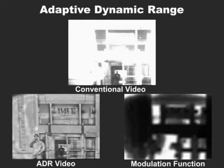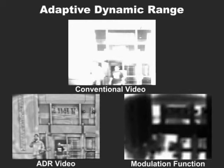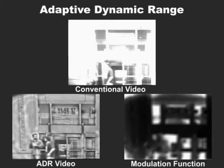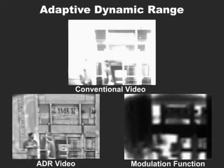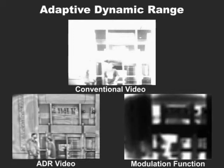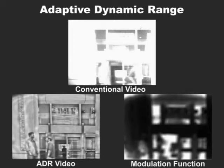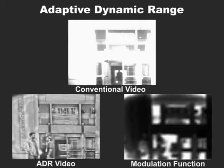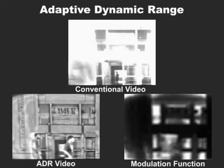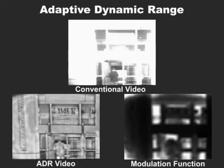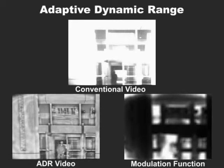A powerful application of the programmable imaging system is adaptive dynamic range. In this case, the system uses a feedback loop to adjust the exposure of each pixel based on the corresponding scene radiance. On top, we see a video of a scene with strong illumination variations taken with the conventional imaging system. At the bottom, we see the adaptive dynamic range output of the system over the same scene, and the modulation function applied to the DMD.